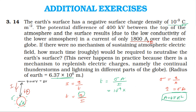Using pi equal to 22 by 7, and radius R equal to 6.37 × 10⁶ meters, the surface area equals 4 pi R squared. Dividing by current I equal to 1800 ampere to get the time.